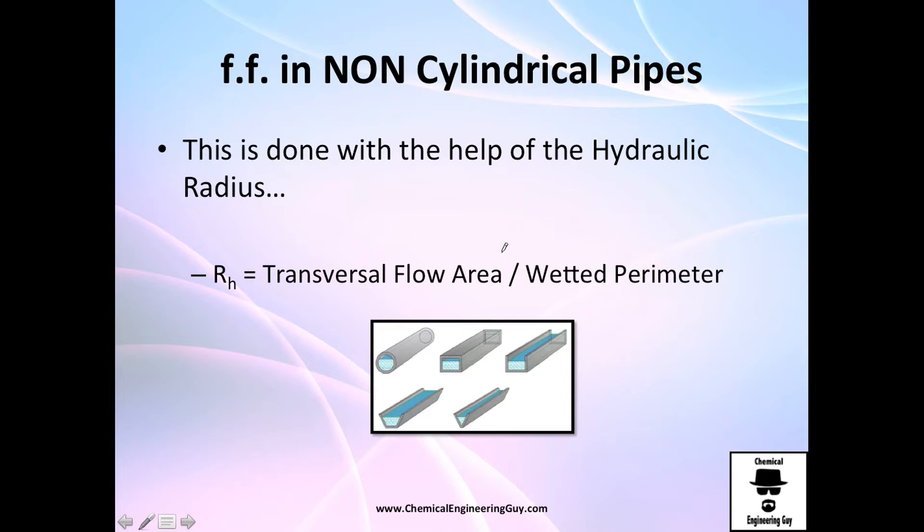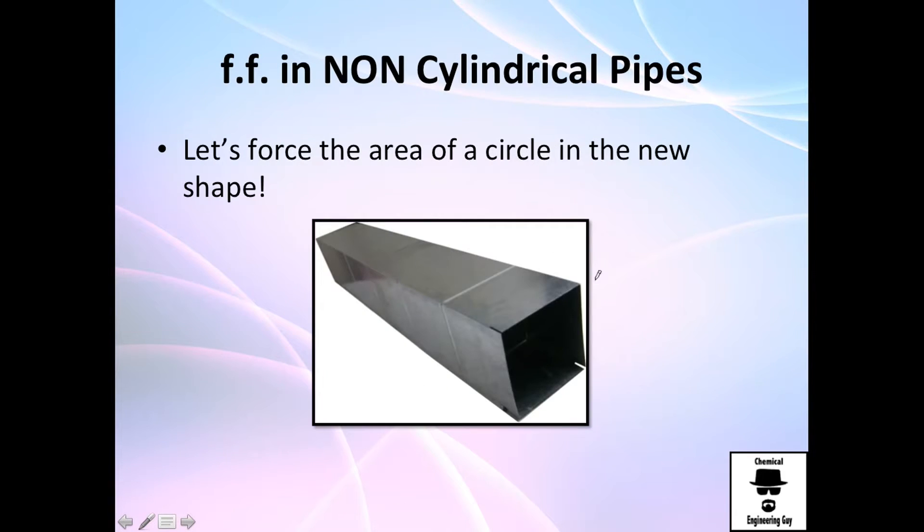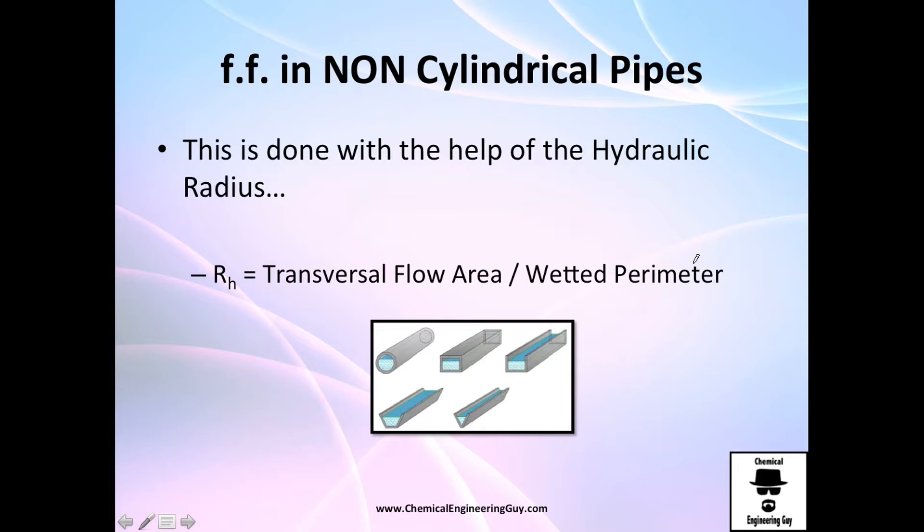We've got this very interesting concept, which is the hydraulic radius, and it will help us to understand how can we force this square duct into a cylindrical duct. Let me give you the formal definition of the hydraulic radius. It's essentially just the transversal flow area divided by the wetted perimeter.